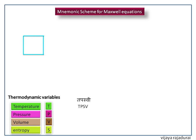Then write T on the right side down corner of the square. Continue to write P, S, V at the corners of the square in counterclockwise direction. Then consider the left side marked as 1.